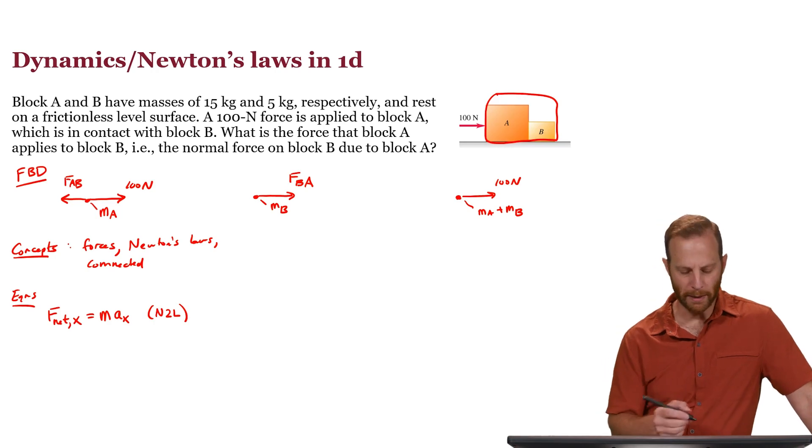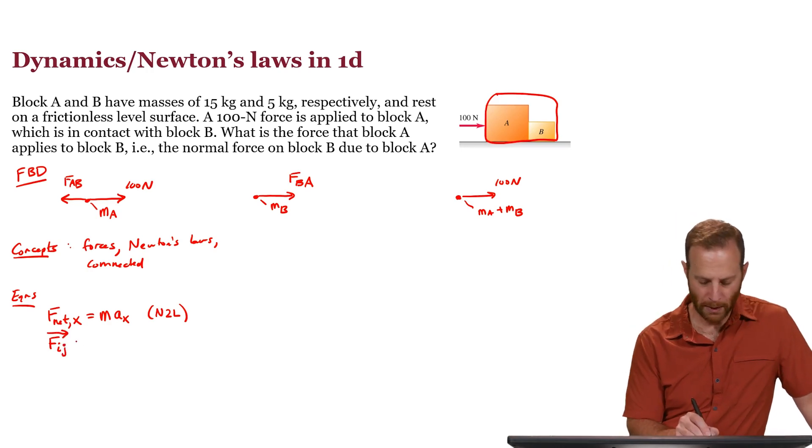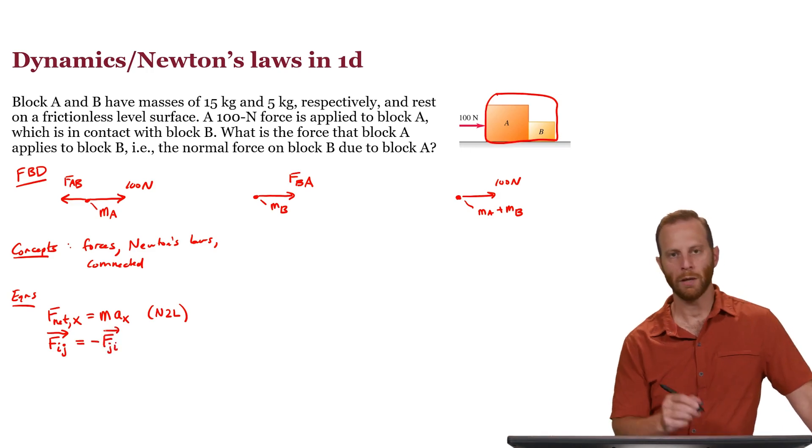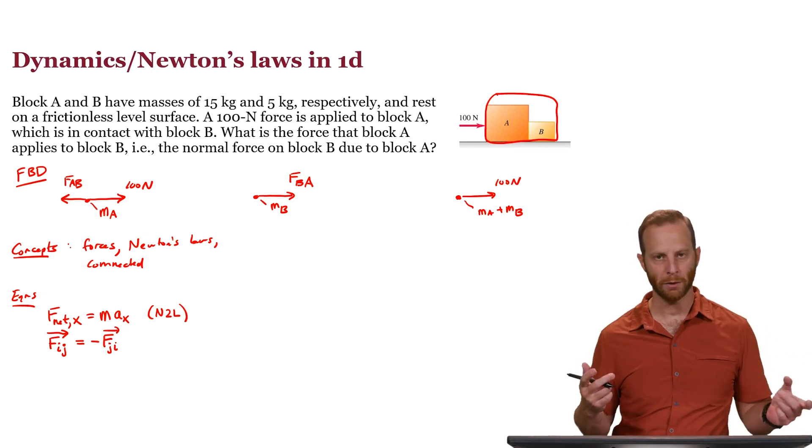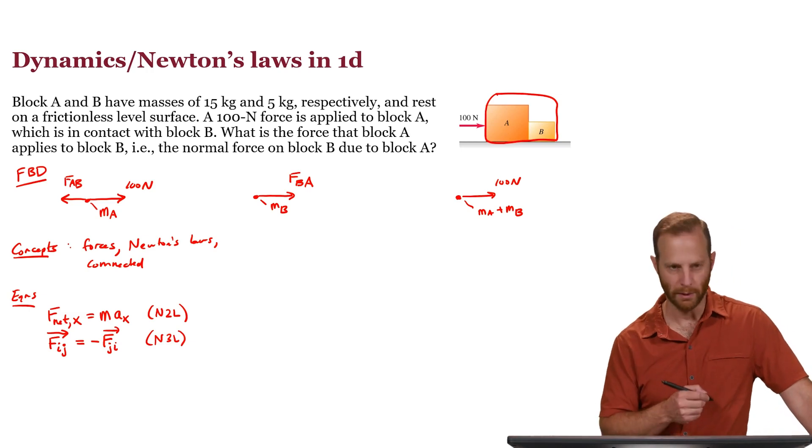There's another Newton's law that we might need. And that is the force on object i due to object j. And I'm going to write this as a vector. It's equal and opposite to the force on object j due to object i. That is to say, those two forces have the same magnitude but they point in opposite directions. That's Newton's third law. And we can make that relevant here.